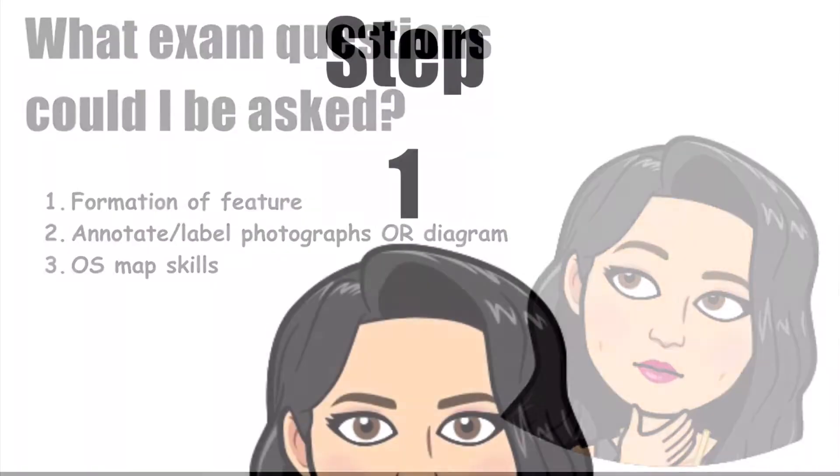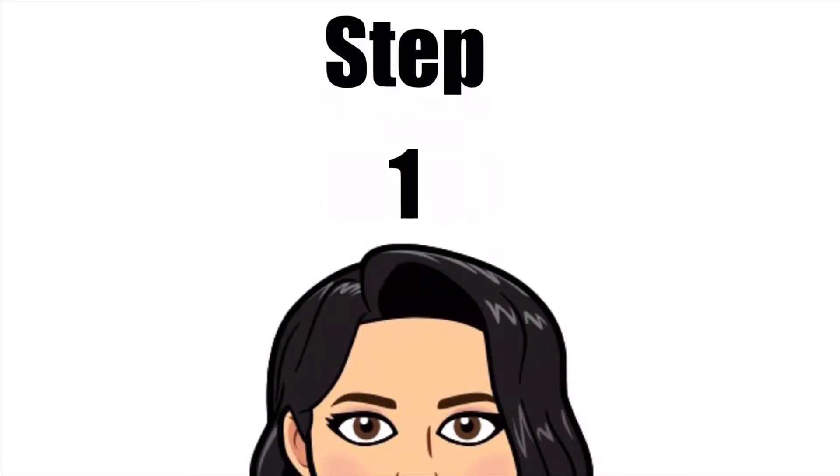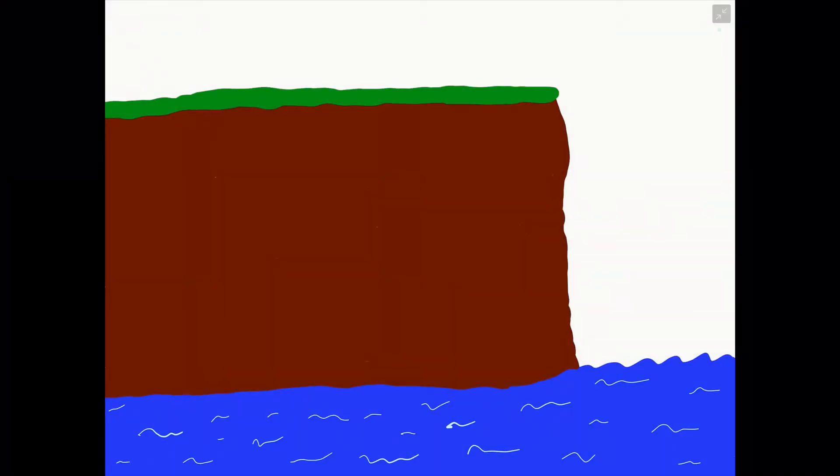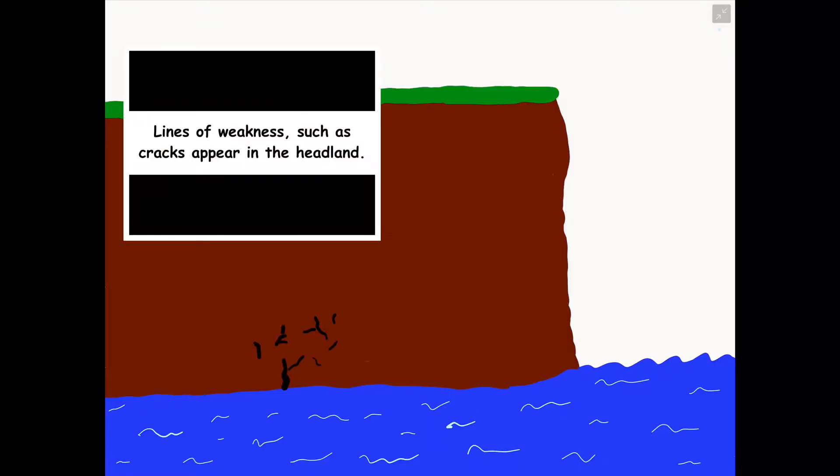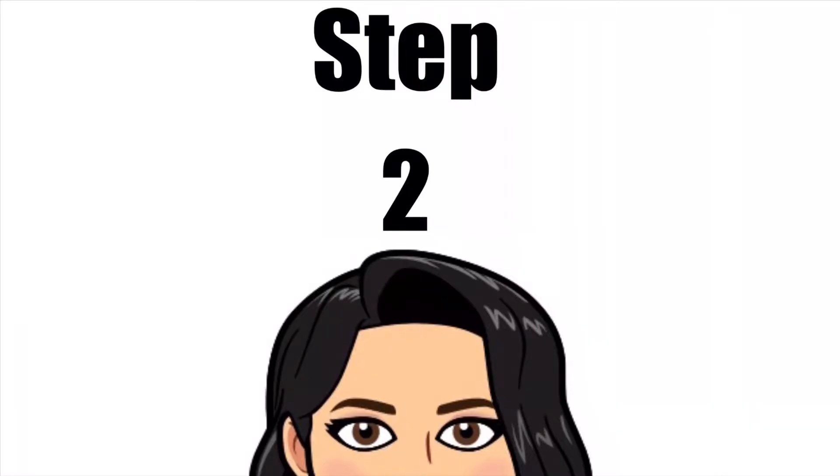Let's get started with looking at the formation of this particular coastal feature. Step one in the formation of a cave, an arch, a stack and a stump is we have a headland, a piece of land which sticks out or protrudes into the sea or body of water. The sea will come up to the headland and constantly hit the headland causing erosion processes such as hydraulic action and abrasion to take place. This will create lines of weakness in the face of the headland or the front of the headland or even the sides of the headland and this is where cracks begin to appear.